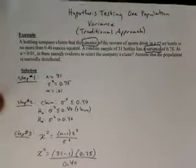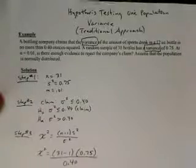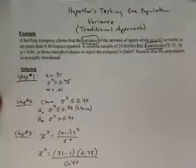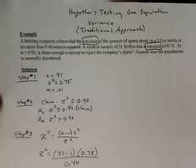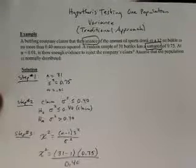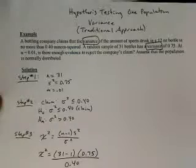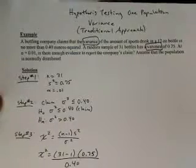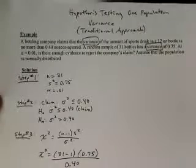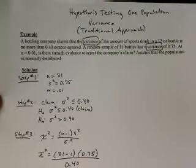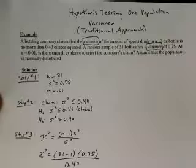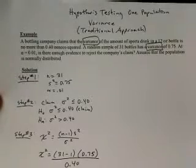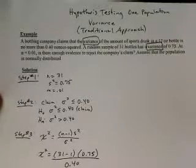This is a hypothesis test on a one-population variance using the traditional approach to hypothesis testing. In this example, a bottling company claims that the variance in the amount of sports drink in a 12-ounce bottle is no more than 0.40 ounces squared. A random sample of 31 bottles has a variance of 0.75 ounces squared. At alpha equals 0.01 level of significance, is there enough evidence to reject the company's claim?